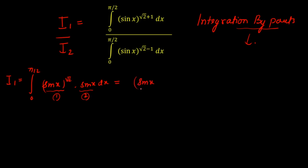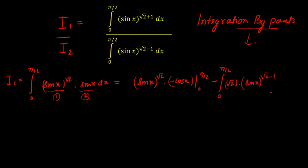Applying the integration by parts formula — first function times the integral of the second. The integral of sin(x) is −cos(x), evaluated from 0 to π/2, minus the integral from 0 to π/2 of the derivative of the first function. Differentiating sin(x)^(√2) gives √2 · sin(x)^(√2−1) · cos(x), multiplied by the integral of the second function, which is −cos(x) dx.